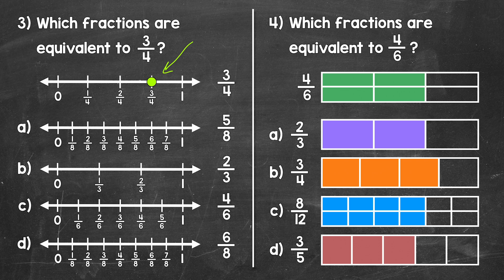Let's go to A, five eighths. Five eighths is right here on the number line. Is five eighths equivalent to three fourths? Is it in the same place on the number line? No, five eighths is not equivalent to three fourths. Let's move on to B, two thirds. Two thirds is right here on the number line. Is it at the same place as three fourths? No, it's close but not quite, so two thirds is not equivalent. Moving on to C, we have four sixths, which is right here on the number line. Is four sixths equivalent to three fourths? No, it's not in the same place on the number line, so this is not equivalent.